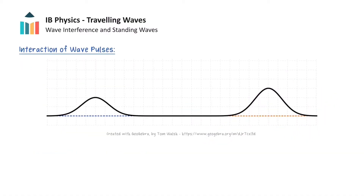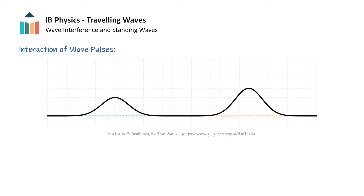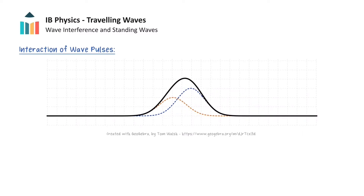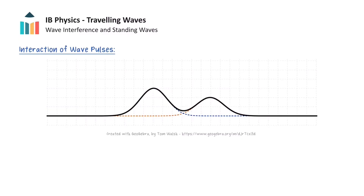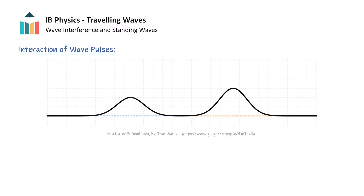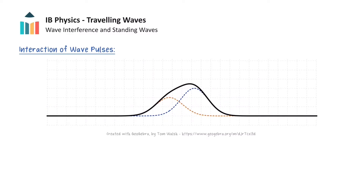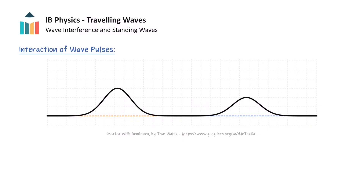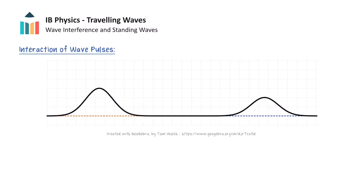Suppose that we have two wave pulses with positive displacement produced in the same rope which are travelling towards each other. As the pulses approach each other, the pulses begin to overlap and the overall disturbance becomes larger. However, after the pulses have overlapped each other, the pulses will continue to travel along the rope and emerge unchanged on the other side. So it appears that the pulses have moved through each other as if they never met at all.